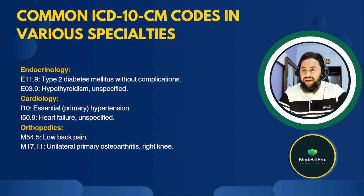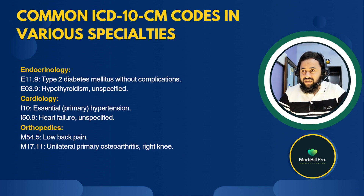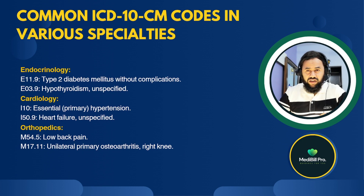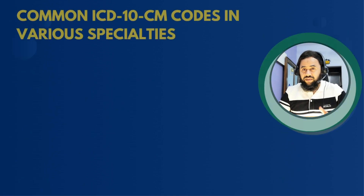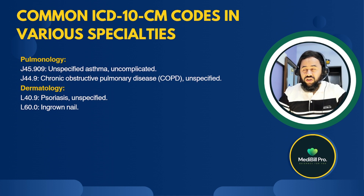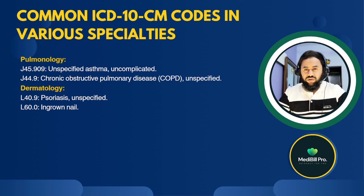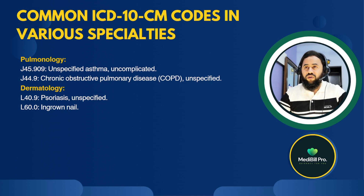Here are common ICD codes in various specialties. Endocrinology: E11.9 — Type 2 diabetes mellitus without complications; E03.9 — Hypothyroidism, unspecified. Cardiology: I10 — Essential (primary) hypertension; I50.9 — Heart failure, unspecified. Orthopedics: M54.5 — Low back pain; M17.11 — Unilateral primary osteoarthritis, right knee. Pulmonary: J45.909 — Unspecified asthma, uncomplicated; J44.9 — COPD, unspecified. Dermatology: L40.9 — Psoriasis, unspecified; L60.0 — Ingrown nail.